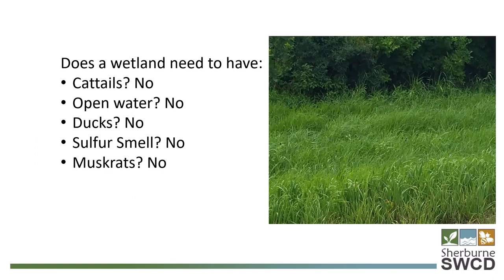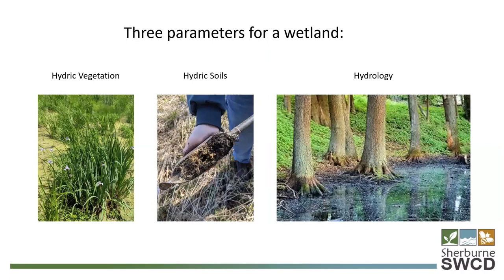To quickly review the three parameters of a wetland: we need hydric vegetation, hydric soils, and hydrology. In Sherbourne County we generally have pretty brown soils, but hydric soils show a dark layer on top with brighter oranges and reds. Hydrology can be standing water but also includes other indicators such as shallow roots on trees, moss, and water lines on trees.